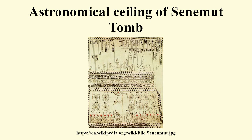The Celestial Diagram consisted of a northern and a southern panel which depicted circumpolar constellations in the form of disks, each divided into 24 sections suggesting a 24-hour time period, lunar cycles, and sacred deities of Egypt.